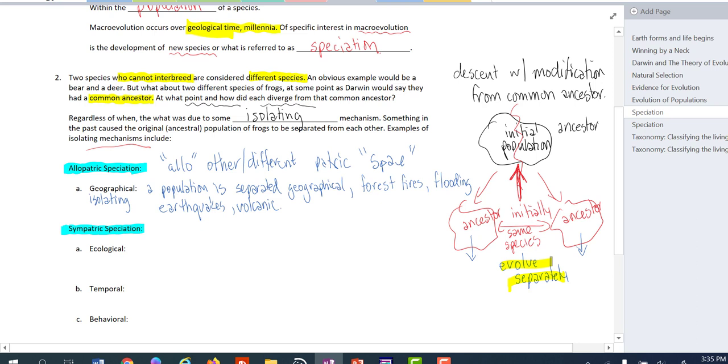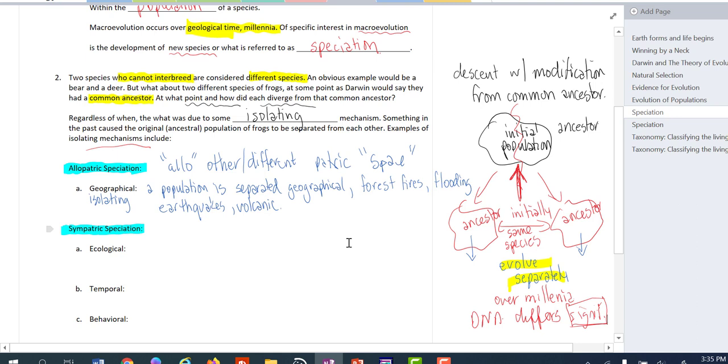Whatever different forms of microevolution occur, eventually over millennia, the DNA will differ significantly. DNA differs significantly that they are unable to interbreed. They can no longer interbreed. And therefore, they are separate species.